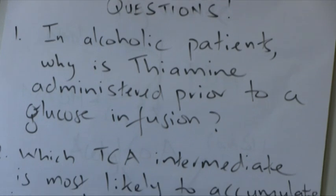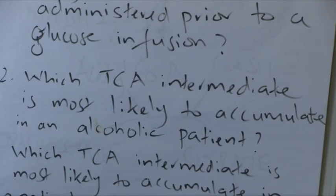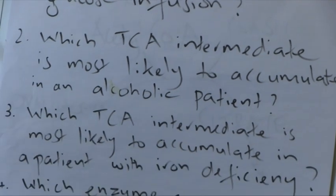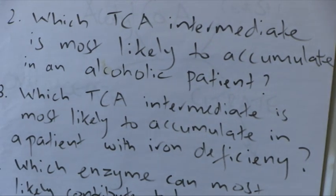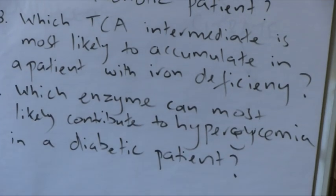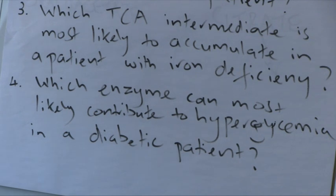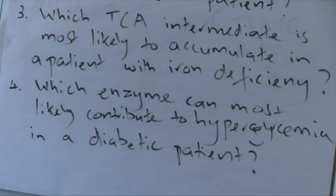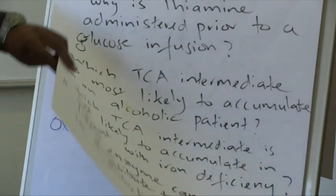Second question: which TCA intermediate is most likely to accumulate in a patient with iron deficiency? Fourth question: which enzyme can most likely contribute to hyperglycemia in a diabetic patient? Take a look at these questions when you're studying and see if you can figure out the answers after having listened to my presentation.